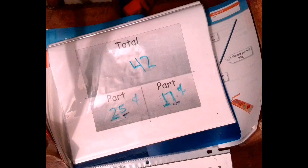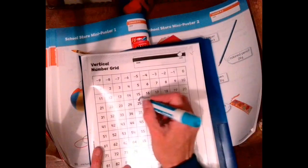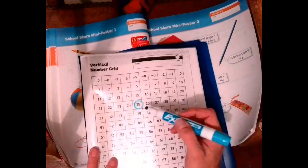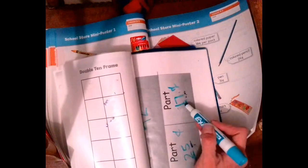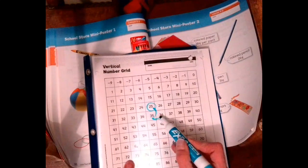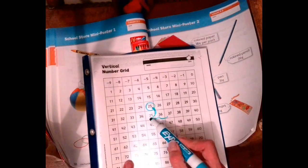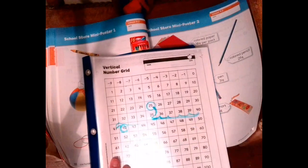You could also use your number grid. Go to your number grid, start at 25, and add up 17. If you look at 17, we have a 1 and 10 here, so we're going to go down one. Now we're going to add seven: one, two, so this would be the 10, 11, 12, 13, 14, 15, 16, 17. And what did we land on? 42. What did we say our answer was? 42. Beautiful.